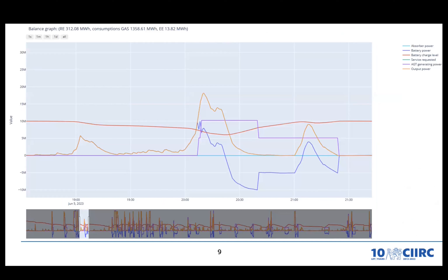This is an example time series of power: the orange line is power generated by the services, the red line shows the battery charge level, the magenta line shows power from spinning generators, and the blue curve shows power generated or absorbed by the battery. This covers a range of a couple of hours.